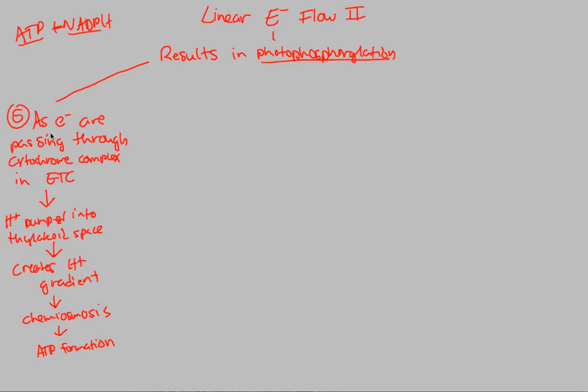We've established step five. We now understand we're going toward photophosphorylation. Let's look at step six now and continue the discussion of linear electron flow. Step six is the idea that light also hits PS1 reaction center complex, RCC.